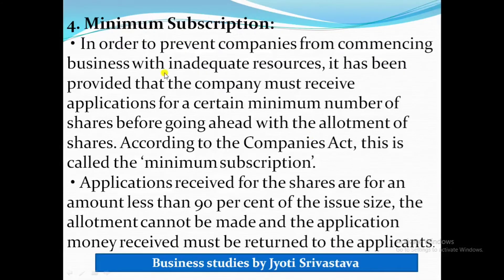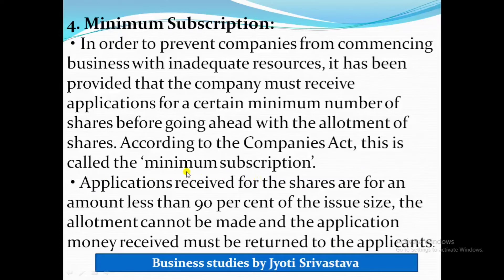In order to prevent companies from commencing business with inadequate resources, it has been provided that the company must receive applications for a certain minimum number of shares before going ahead with allotment. According to the Companies Act, this is called minimum subscription. The rule is that if applications are received for an amount less than 90% of the issue size, the allotment cannot be made and the application money received must be returned to the applicants. So if 50,000 shares were launched and 90% of that is 45,000 — if even 45,000 shares cannot be issued, all the application money must be returned.